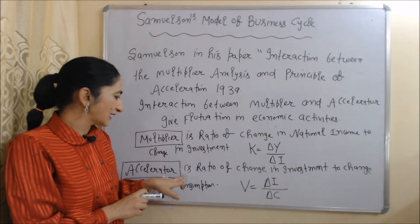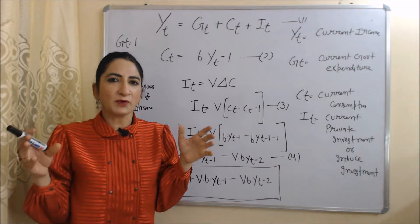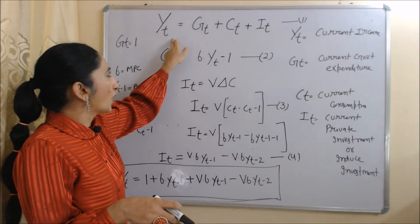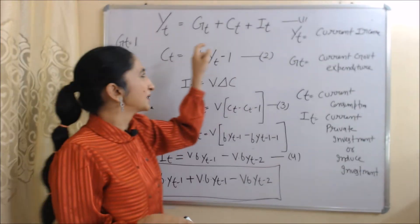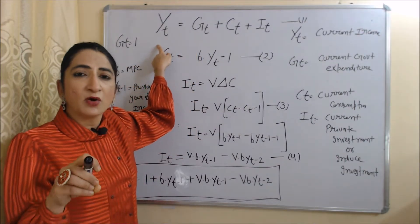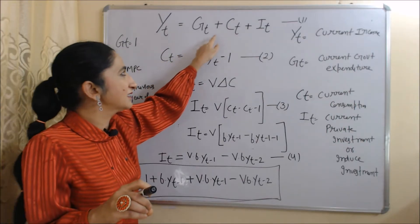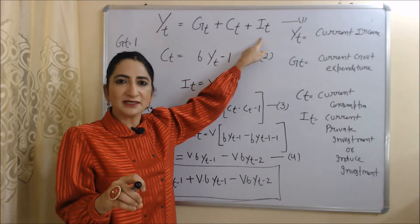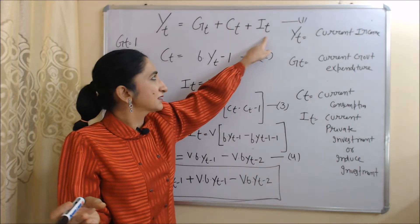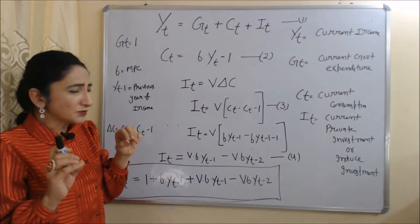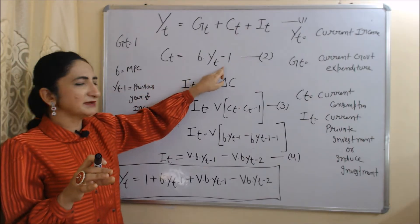According to this model, when Multiplier and Accelerator interact, fluctuation will be created in economic activities. Now we are going to talk about the equation of this model. The first equation is: Yt = Gt + Ct + It. Here Yt is current income (income in period T), Gt is current government expenditure, Ct is current consumption, and It is current induced investment or current private investment. We assume Gt is constant and equal to 1, and Ct = B × Yt-1.